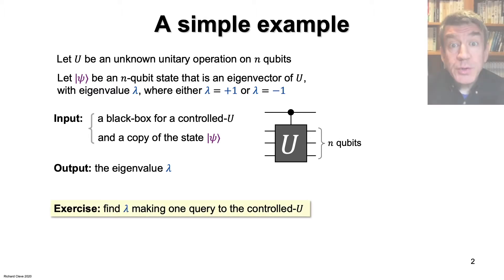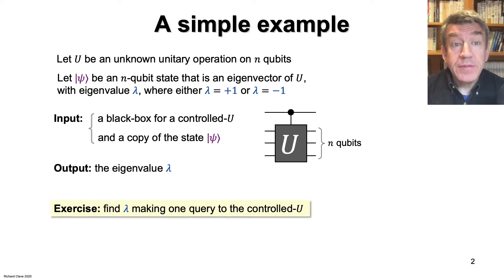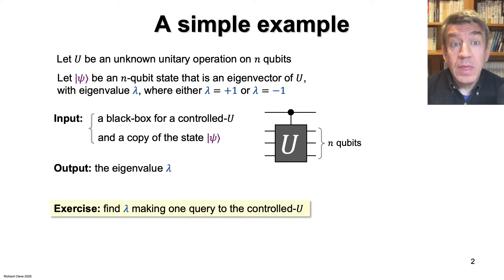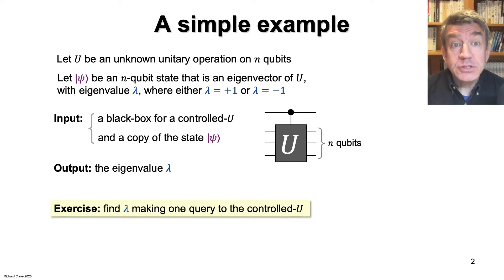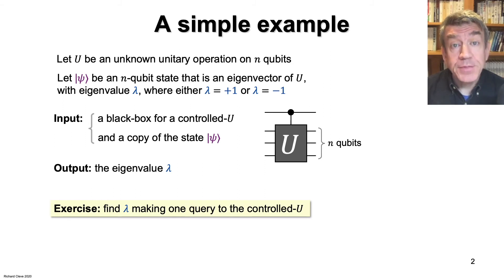I'd like you to think about how this can be done — that is, I'd like you to come up with a quantum circuit that produces the answer. What state should you set the control qubit to? What state should you set the n target qubits to? Now is a good time to pause the video to think about this.